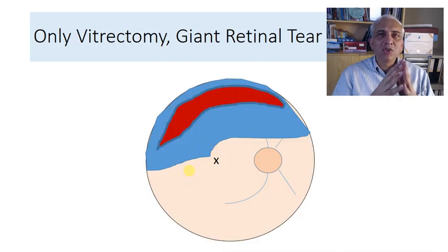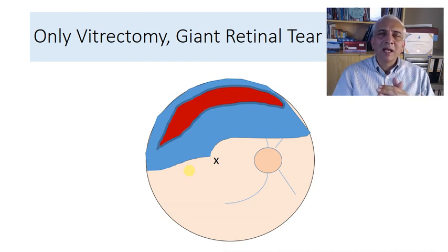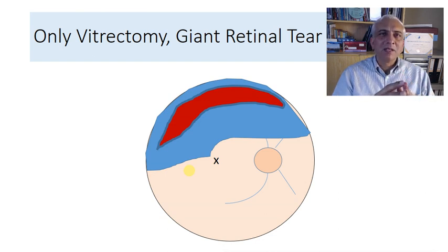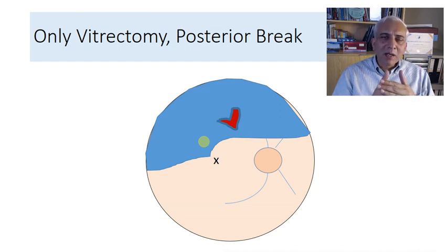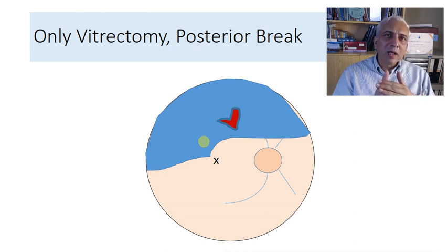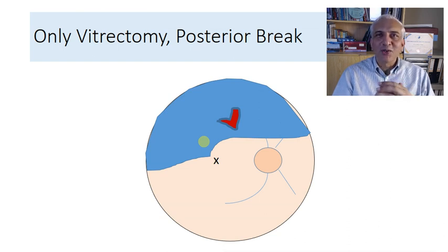There are situations where only vitrectomy is feasible. If you've got a very large giant retinal tear, especially one that goes back beyond the equator, a buckle cannot support it — pars plana vitrectomy is a must. Similarly, if you've got a posterior break behind the equator, you need pars plana vitrectomy, because buckling only works if the buckle supports the break; if the break does not come onto the buckle, the retina will not flatten.